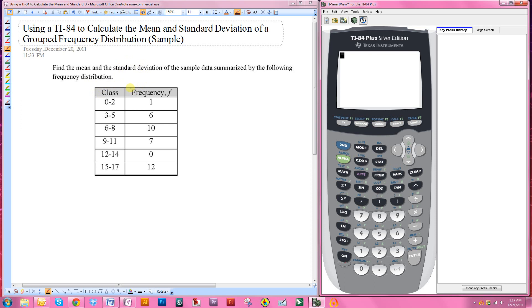In a grouped frequency distribution, you don't know exactly what each of the individual data elements are. However, I do know that there are six data values that lie between 3 and 5.